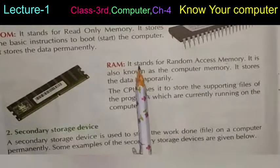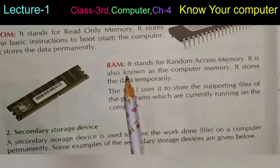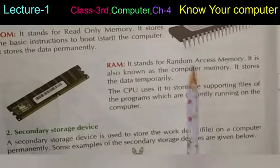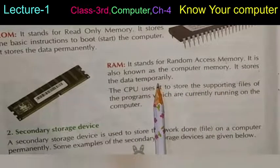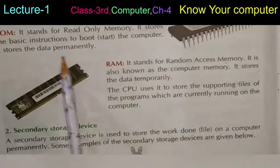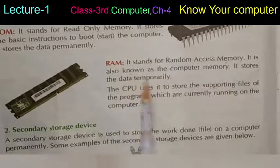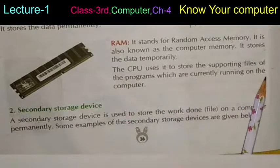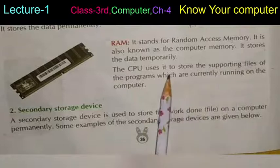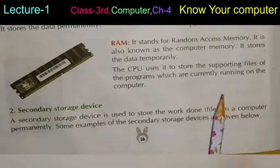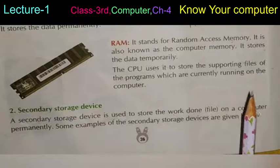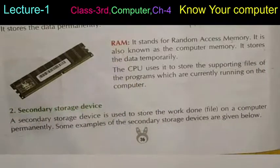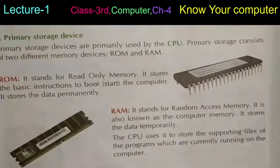RAM stands for Random Access Memory. It is also known as the computer memory. RAM stores data temporarily — jab bhi hum kisi file pe kaam karte hain ya koi file open hoti hai, usse store karne ke liye RAM ka use hota hai. The CPU uses RAM to store the supporting files of programs which are currently running on the computer.